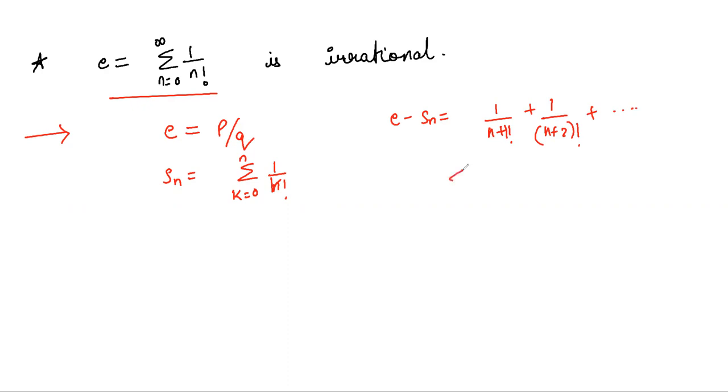This is strictly less than 1 over n plus 1 factorial times 1 plus 1 over n plus 1 plus 1 over n plus 1 square plus dot dot dot.